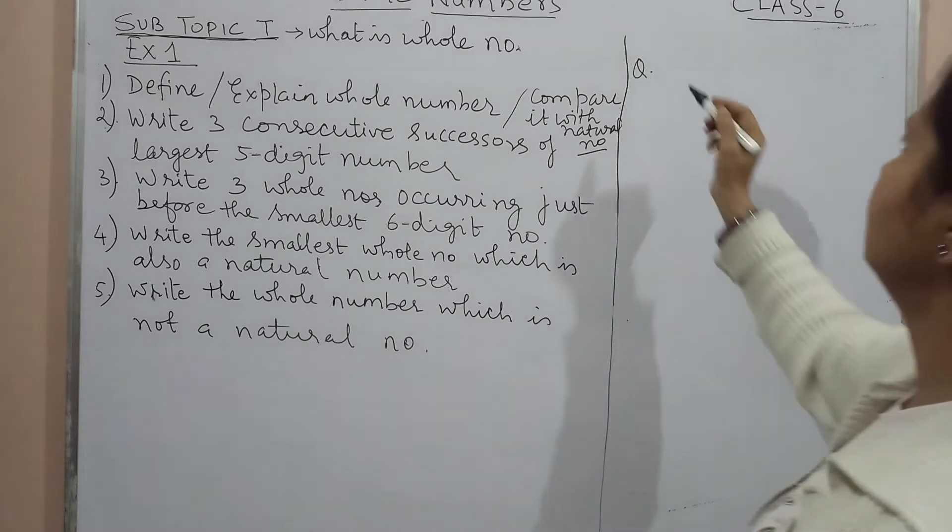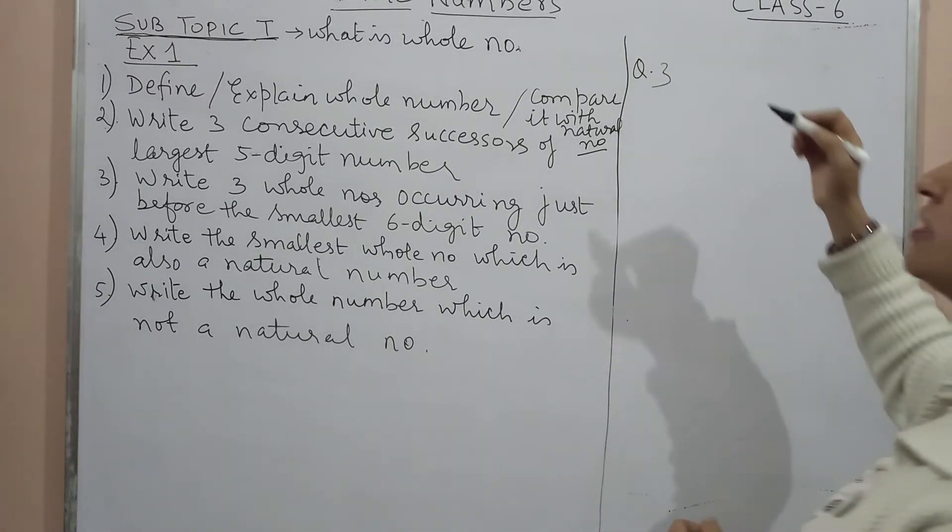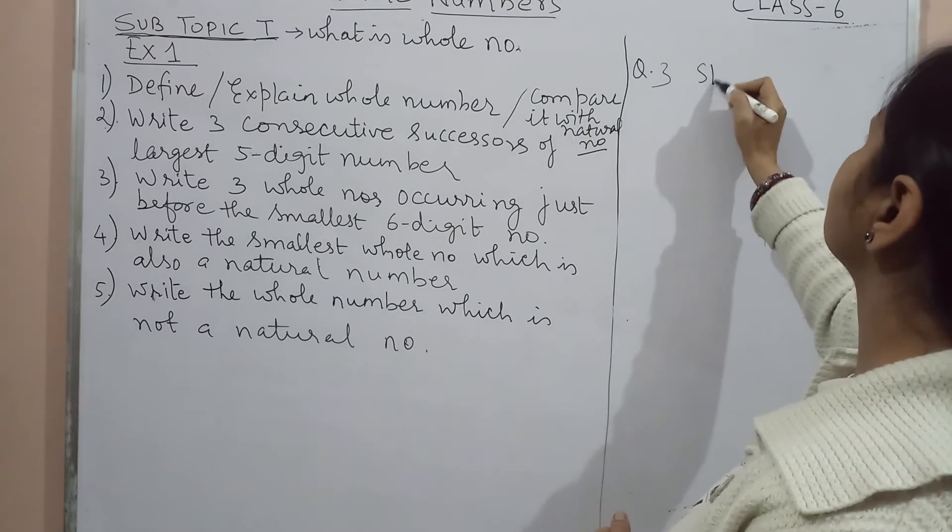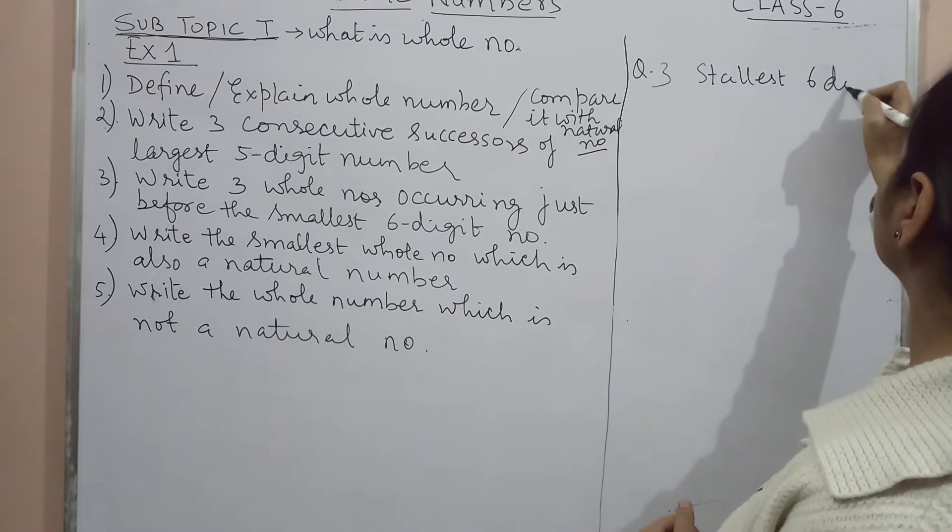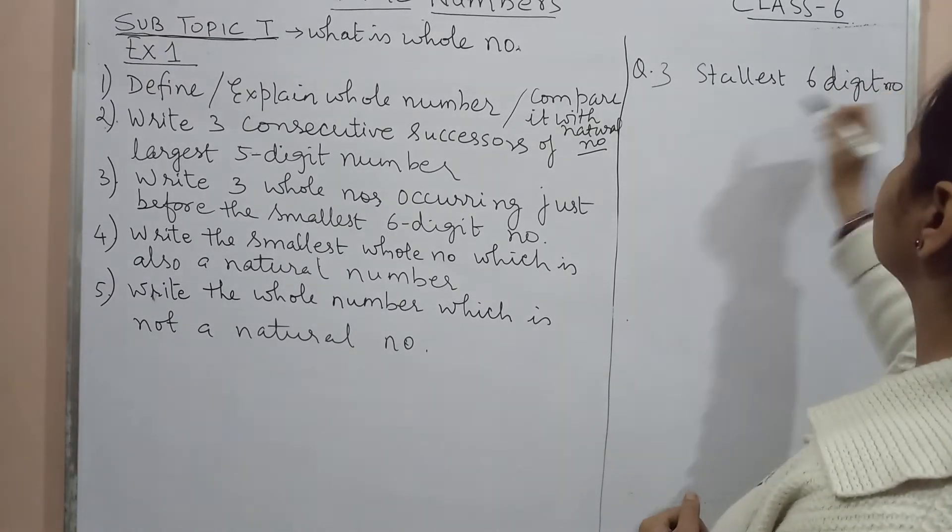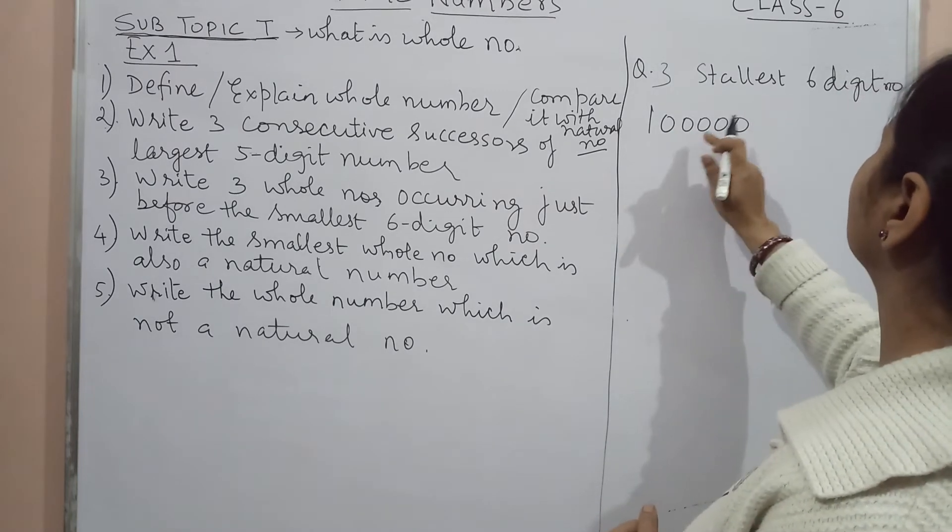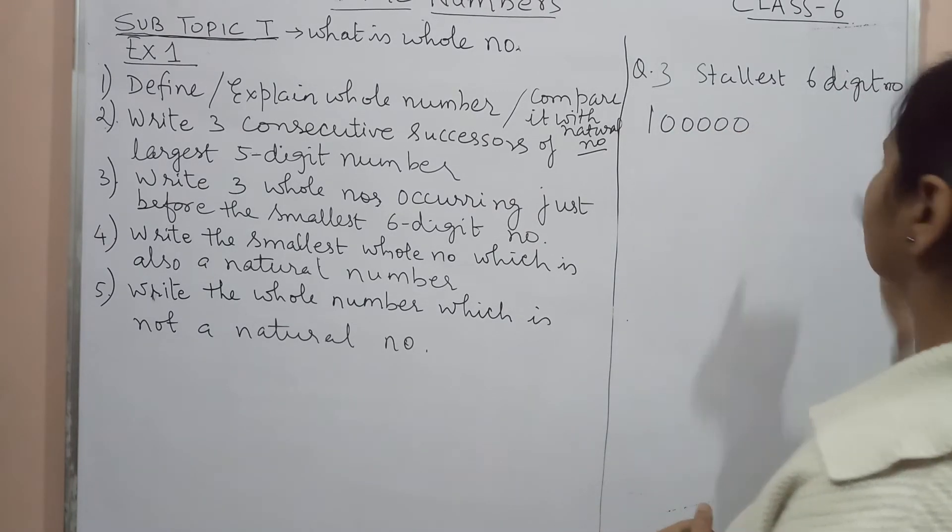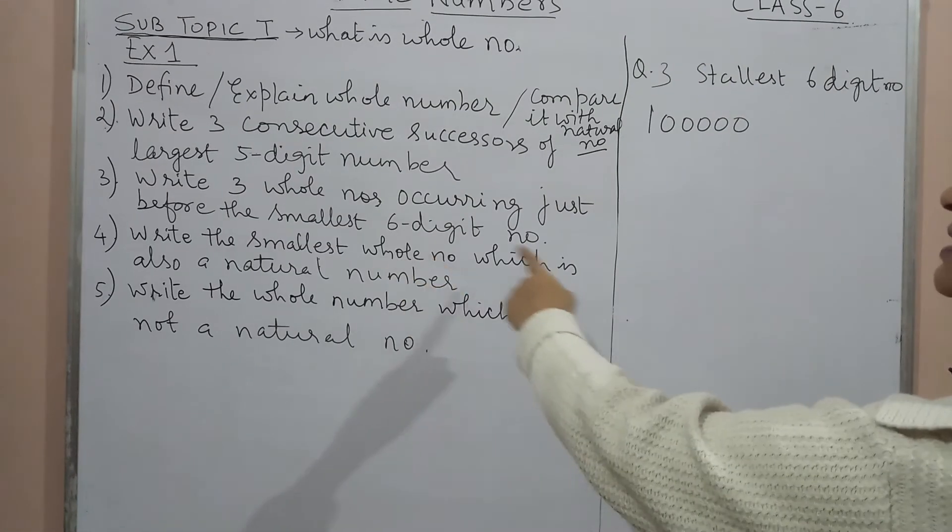Now the third one: write three whole numbers occurring just before smallest six-digit number. Now smallest six-digit number is one, five zeros, 100000.